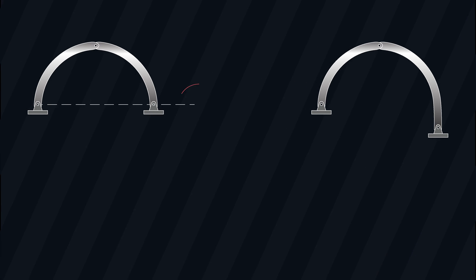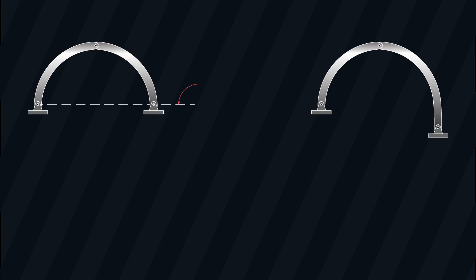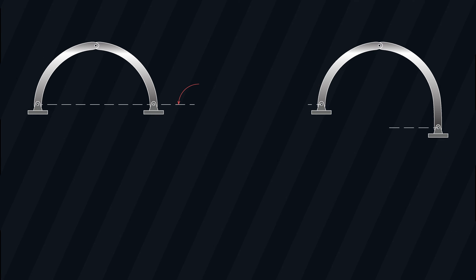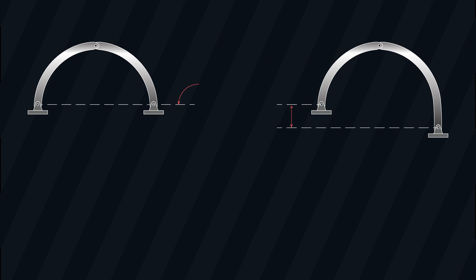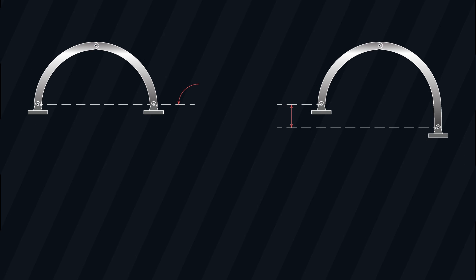There are generally two types of 3-Hinge Arc that you will encounter in statics. We have the one with its external hinges lying on the same level, and the other one where its external hinges do not lie on the same level.